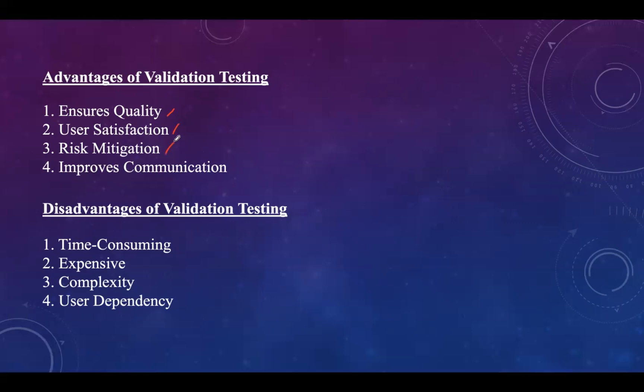Then risk mitigation: validation testing minimizes the risk of failures in production by thoroughly validating the software against real world scenarios. It even improves communication, which can be done in various ways. First, it includes stakeholder involvement.